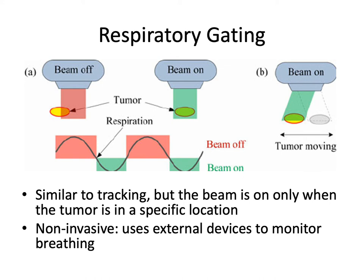Respiratory gating is similar to tracking, but the beam is only on when the tumor is in a specific location. The beam is off as the tumor moves out of the desired respiratory phase, and then as the patient breathes out the beam comes on, continuing throughout the cycle. This is a non-invasive method that does not require a fiducial marker, but it requires extensive monitoring to be done accurately and increases treatment time because you're only treating in certain phases of the breath cycle.